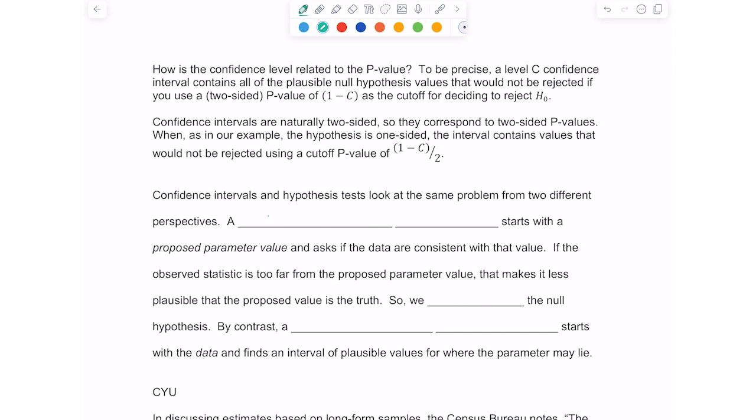Confidence intervals and the hypothesis test look at the same problem from two different perspectives. A hypothesis test starts with a proposed parameter value and asks if the data are consistent with that value. If the observed statistic is too far from the proposed parameter value, that makes it less plausible that the proposed value is the truth. So, of course, we end up rejecting the null hypothesis. By contrast, a confidence interval starts with the data and finds an interval of plausible values for where the parameter may lie.